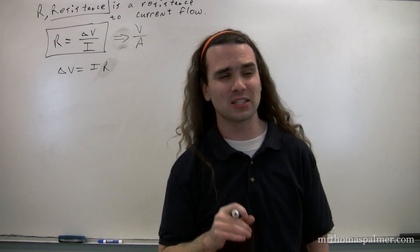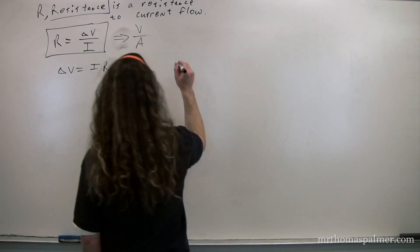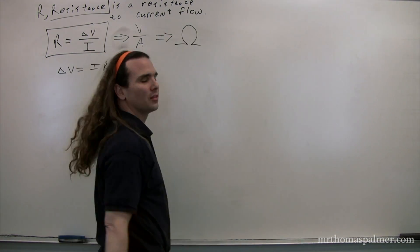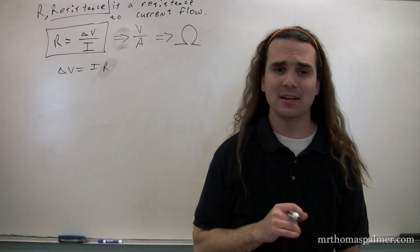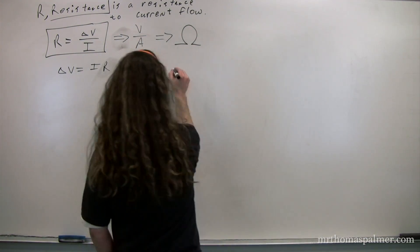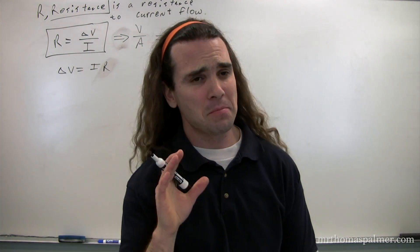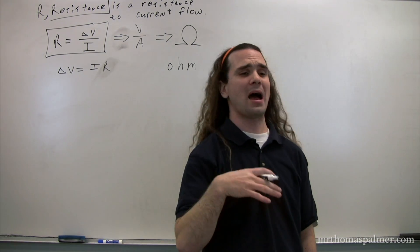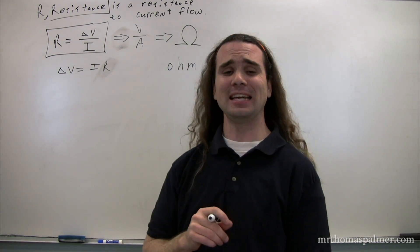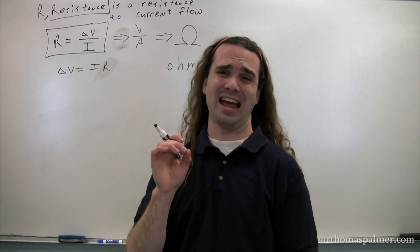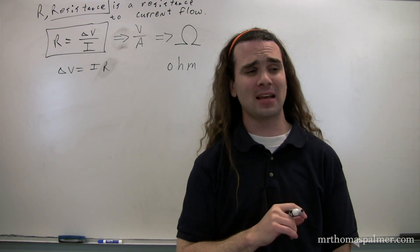A volt per amp has a specific name — it is called an ohm. The symbol for ohms is the Greek letter omega, capital omega. And the way you spell ohm is O-H-M. A lot of students have a hard time remembering the dimensions for resistance, so I present this to you: the symbol for resistance is an upside-down horseshoe.